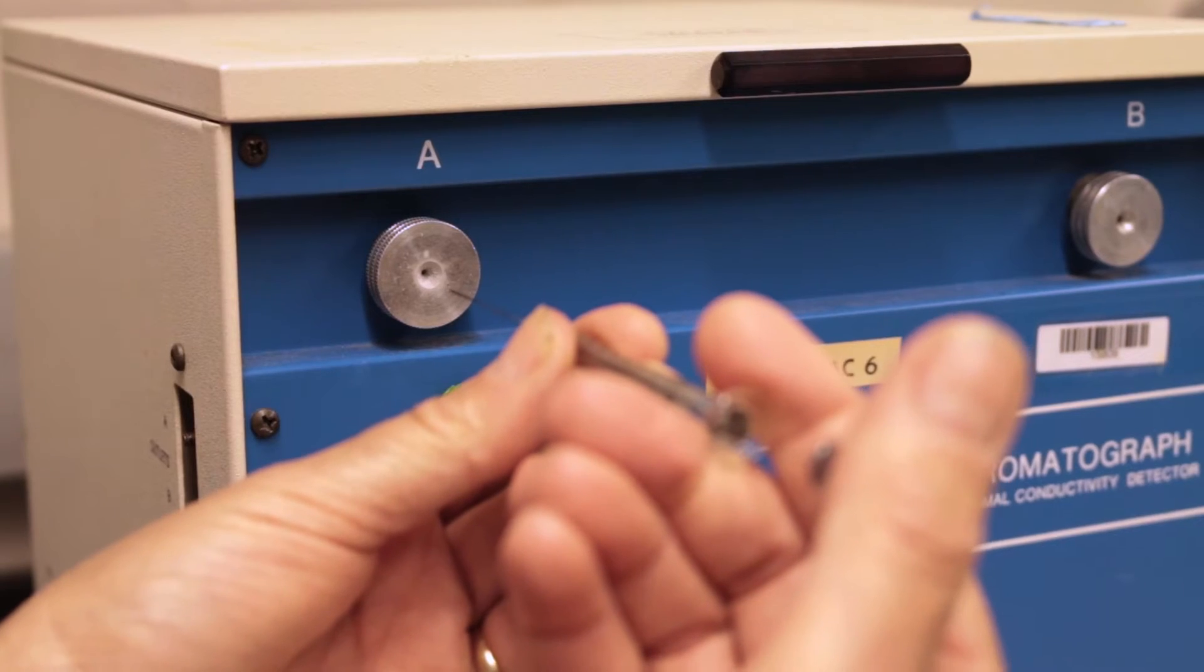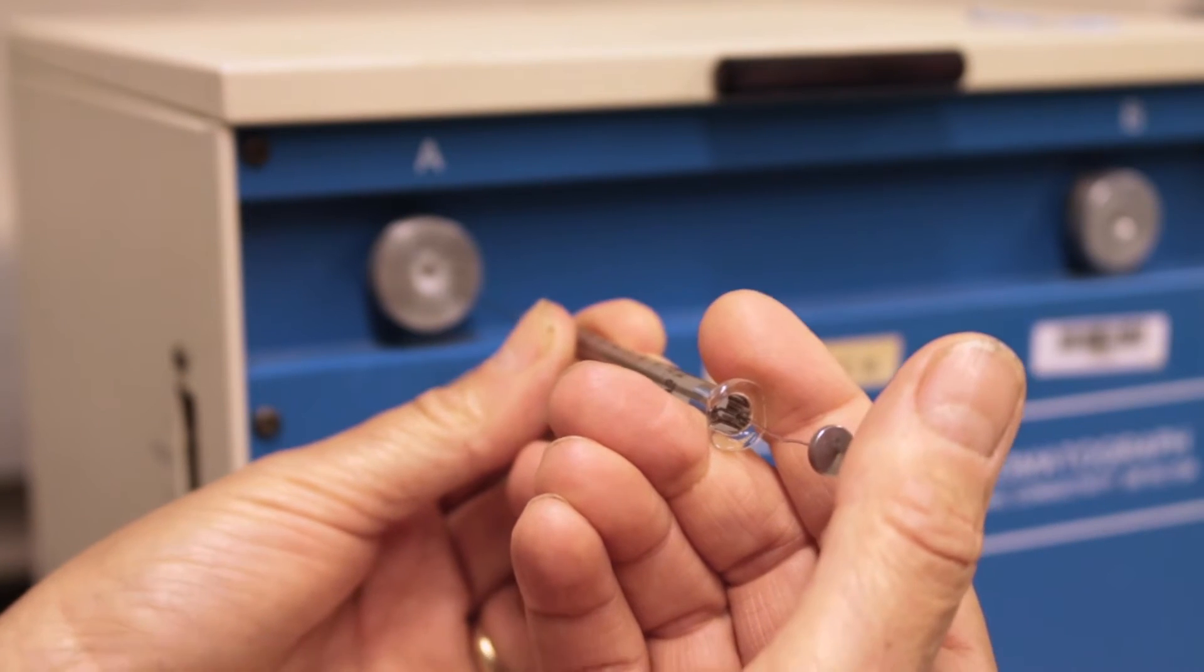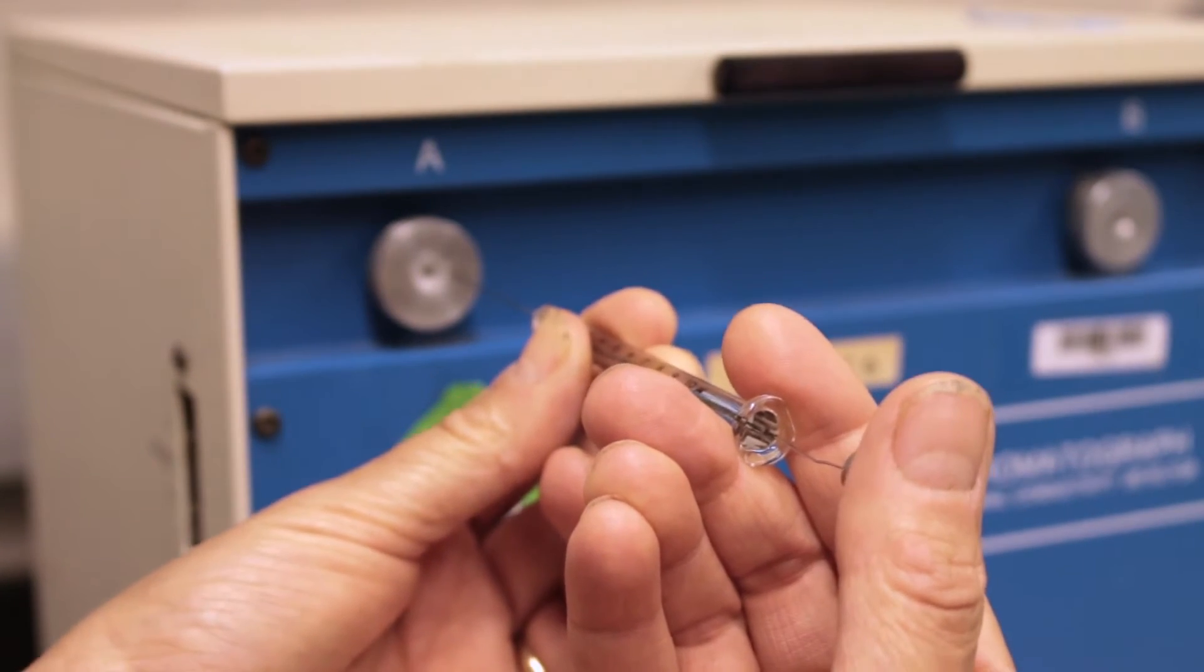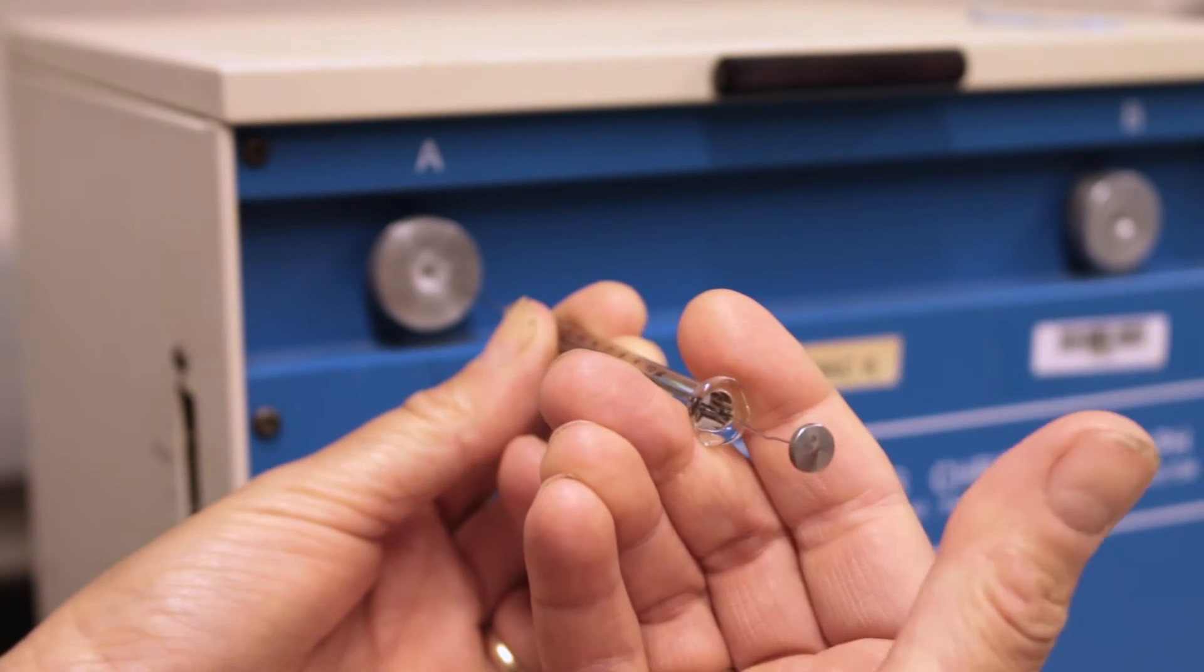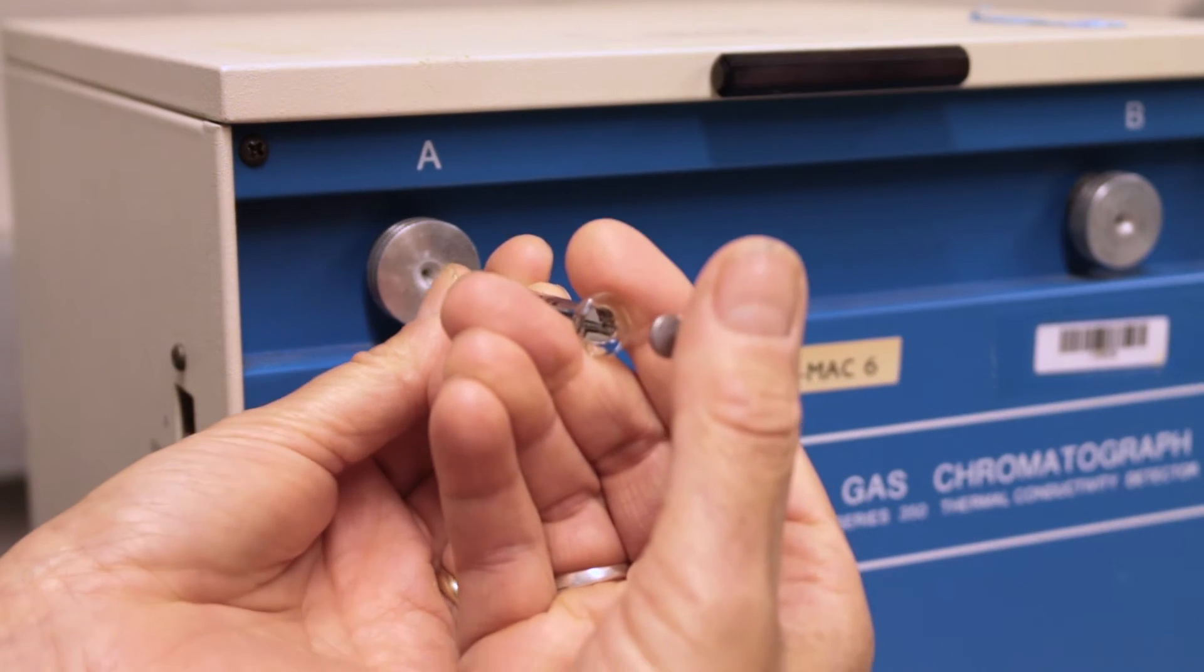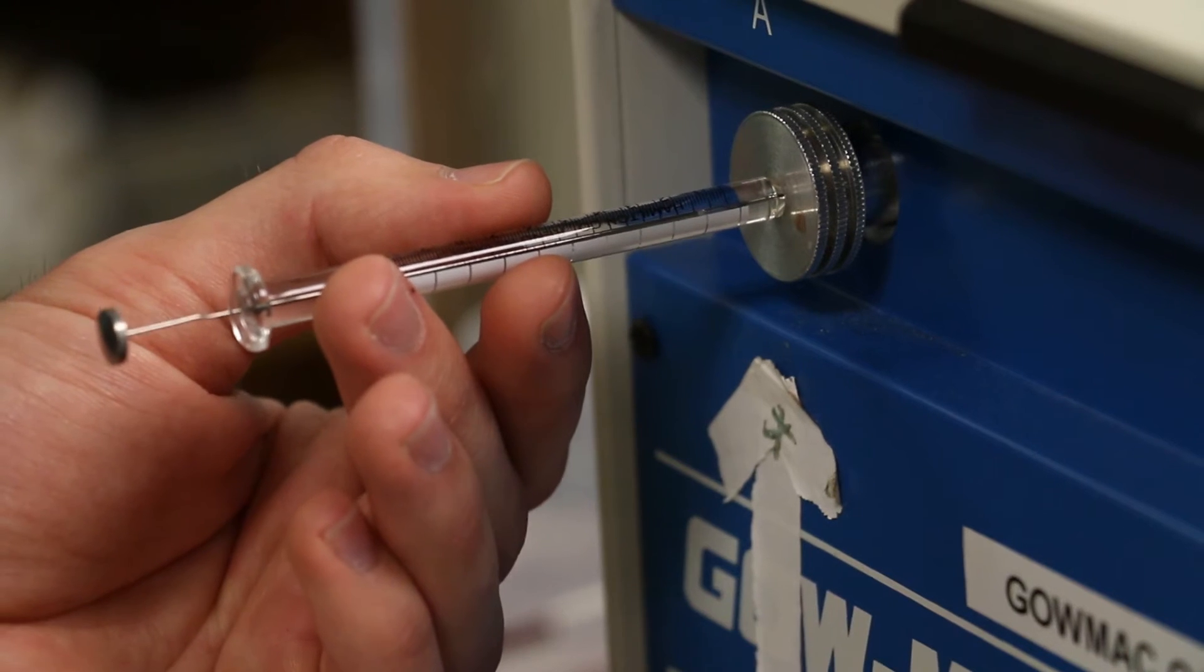Smooth injection technique is important in obtaining a good chromatogram. To inject your sample, hold the syringe horizontally using one hand to hold the glass barrel and position the thumb of the other hand behind the plunger. Using the hand on the barrel, push the needle horizontally through the septum in the injection port until the glass barrel touches the metal port.